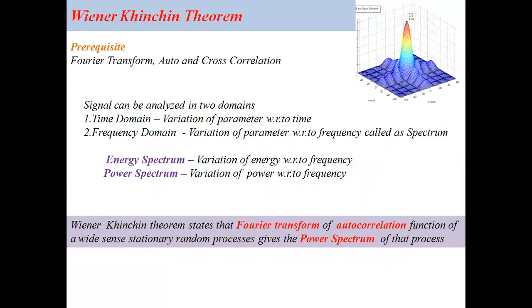If we look into the basics, a signal can be analyzed in two domains. One is the time domain, where we analyze the variation of a signal parameter with respect to time. The second one is the frequency domain, where we analyze the variation of a signal parameter with respect to frequency, which is also called a spectrum. Generally, time domain analysis can also be called temporal characteristics, and frequency domain analysis can also be called spatial characteristics.